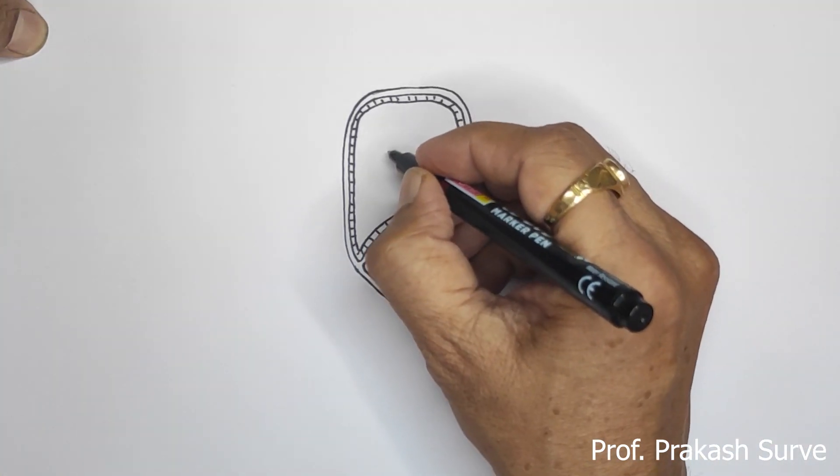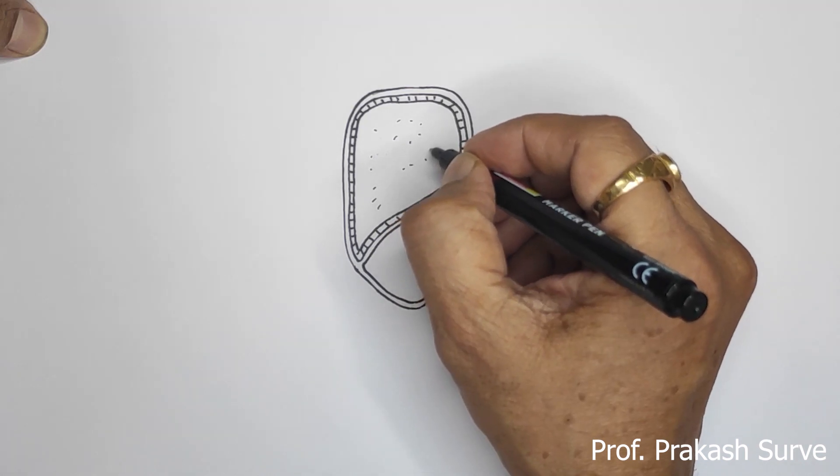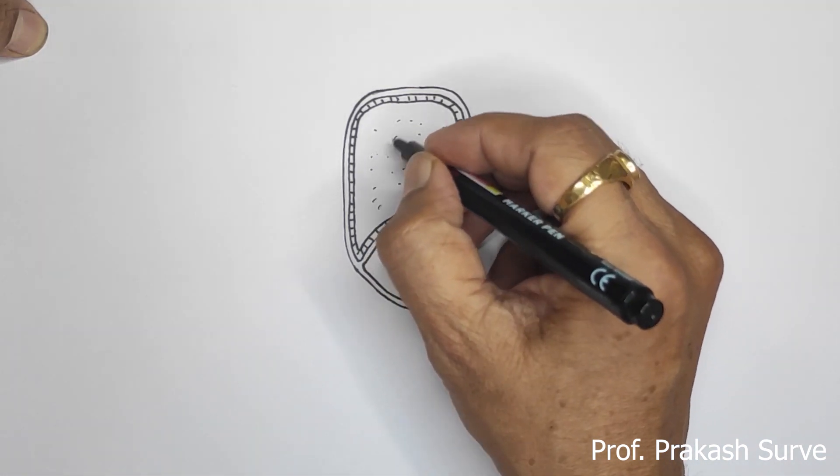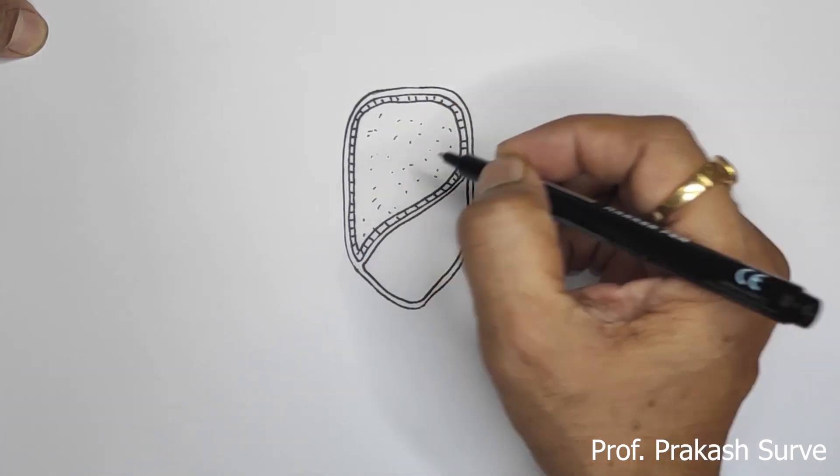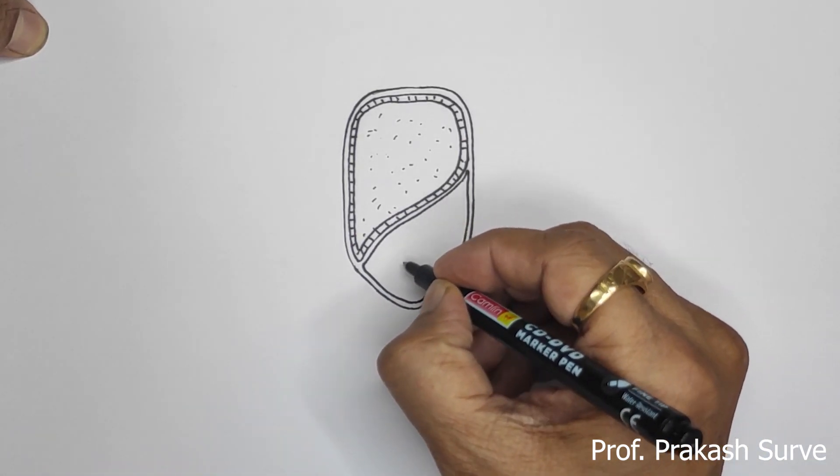So this area here is about the endosperm. Now here we'll draw the coleorhiza and then the radicle.